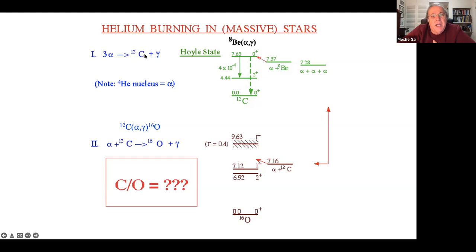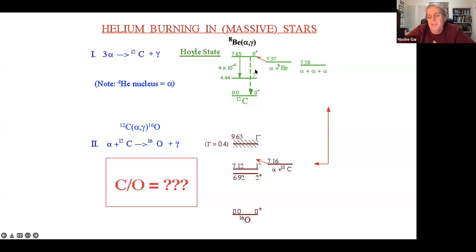At the same time carbon-12 is made, carbon-12 can fuse with another alpha to make oxygen-16 - what we call C12(α,γ). Here is the energy level diagram: alpha plus carbon-12 lies in a region of oxygen-16 with no resonance. If there were a resonance, calculating the cross section would be easy. Without one, it is extremely difficult.